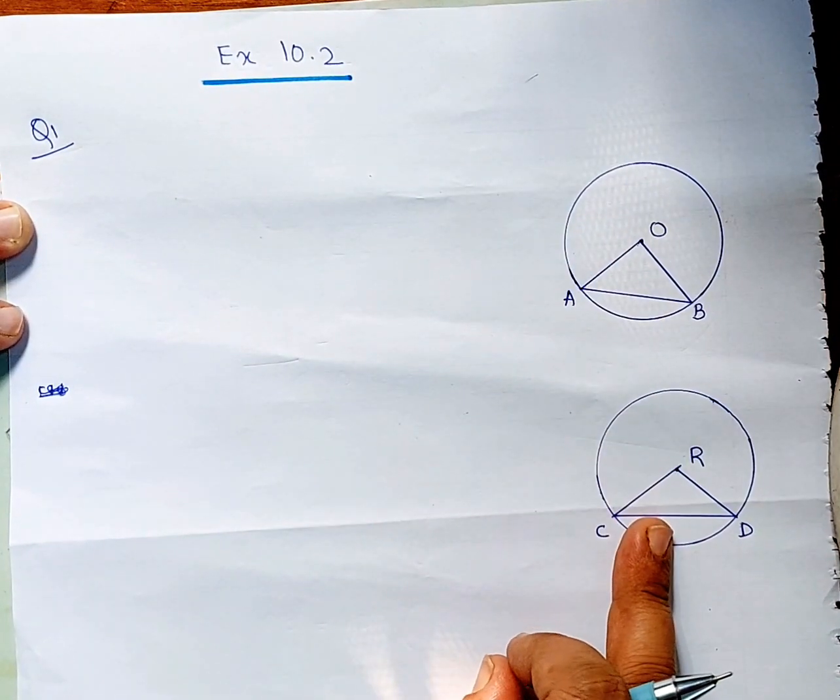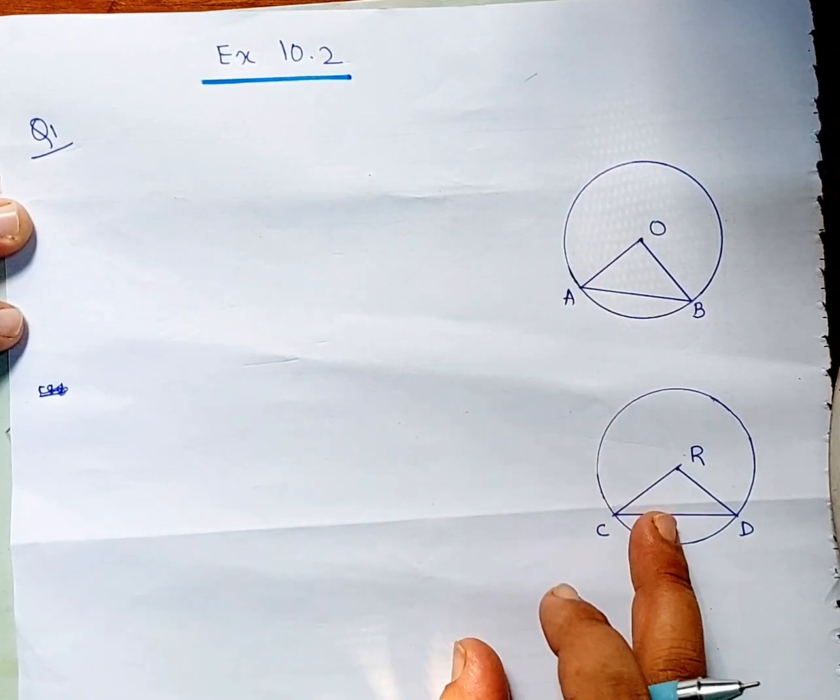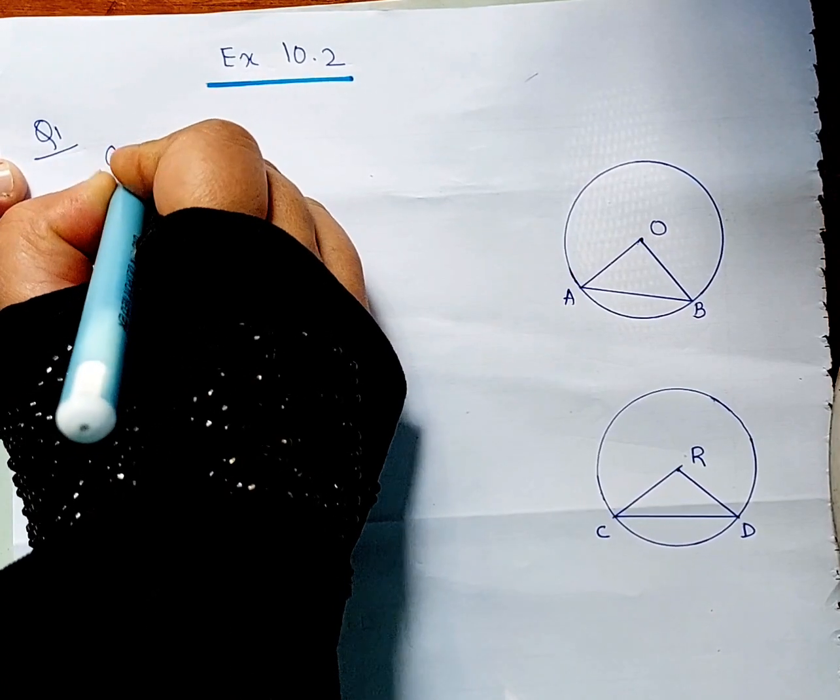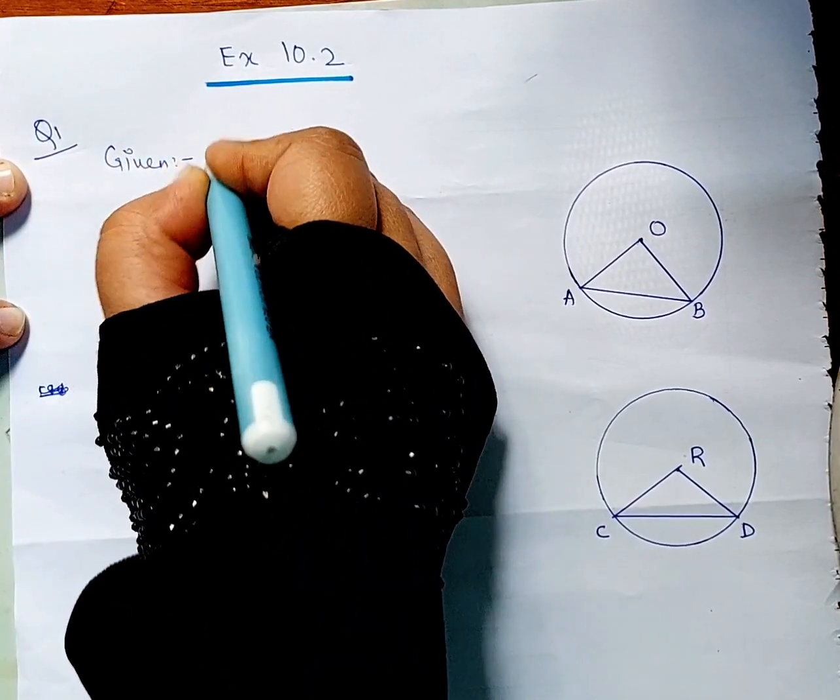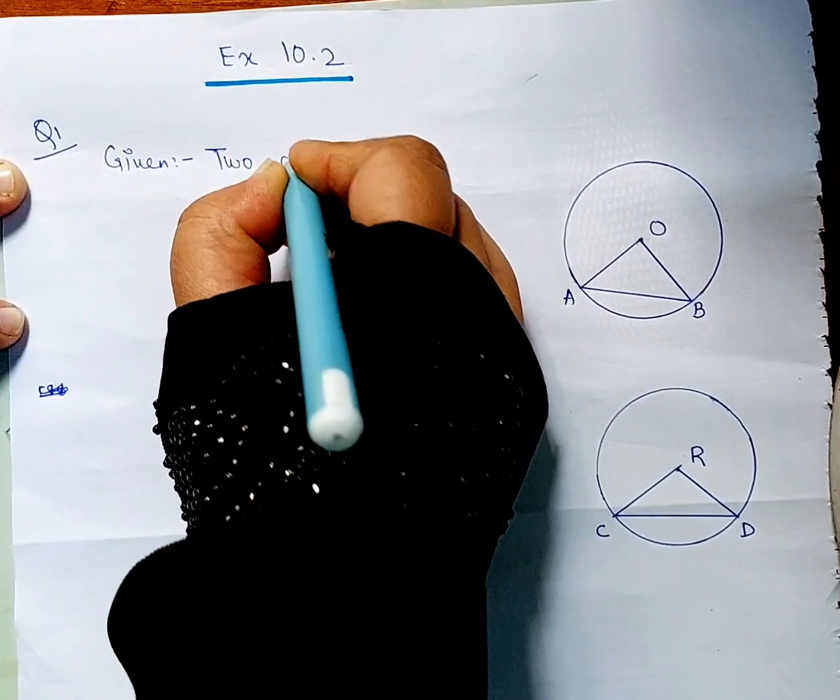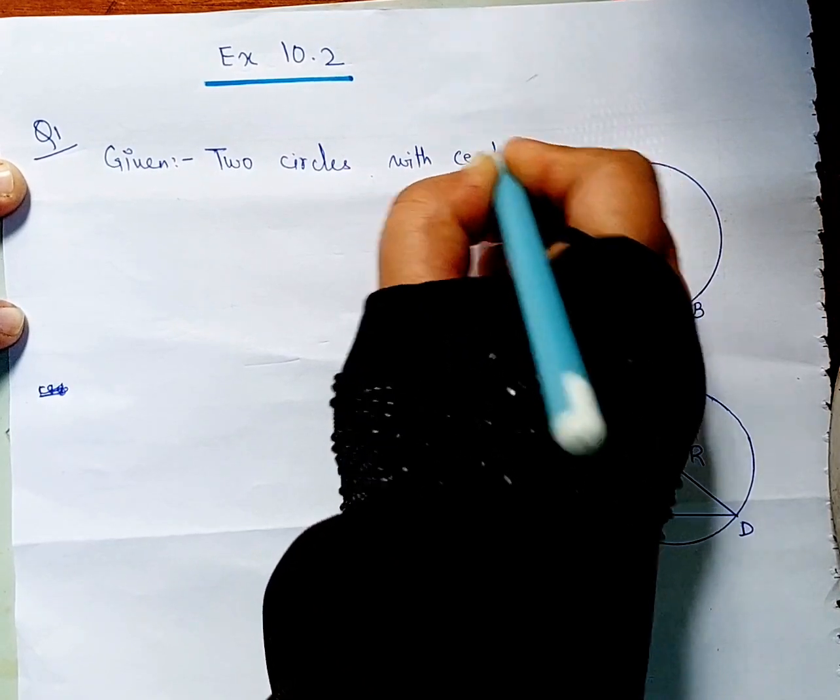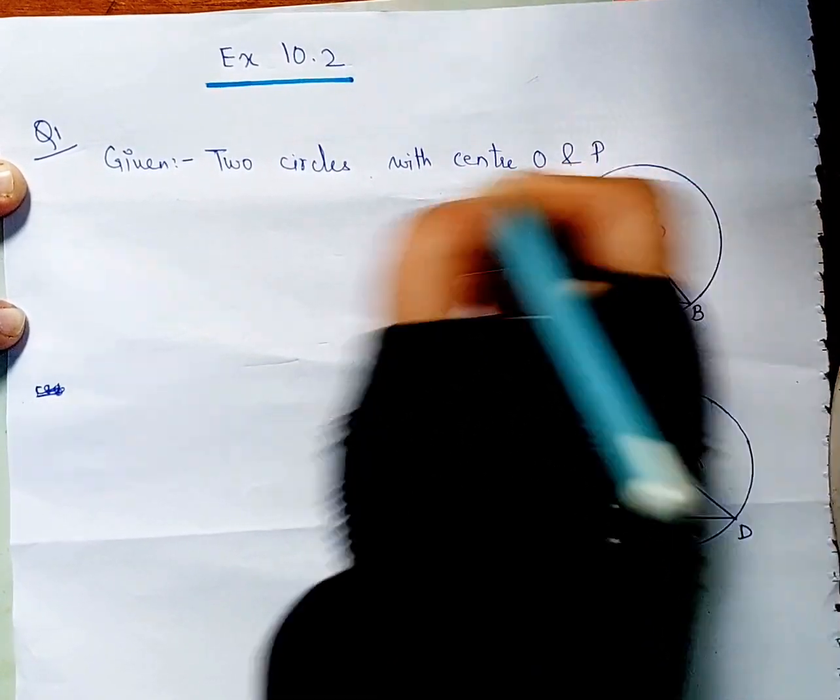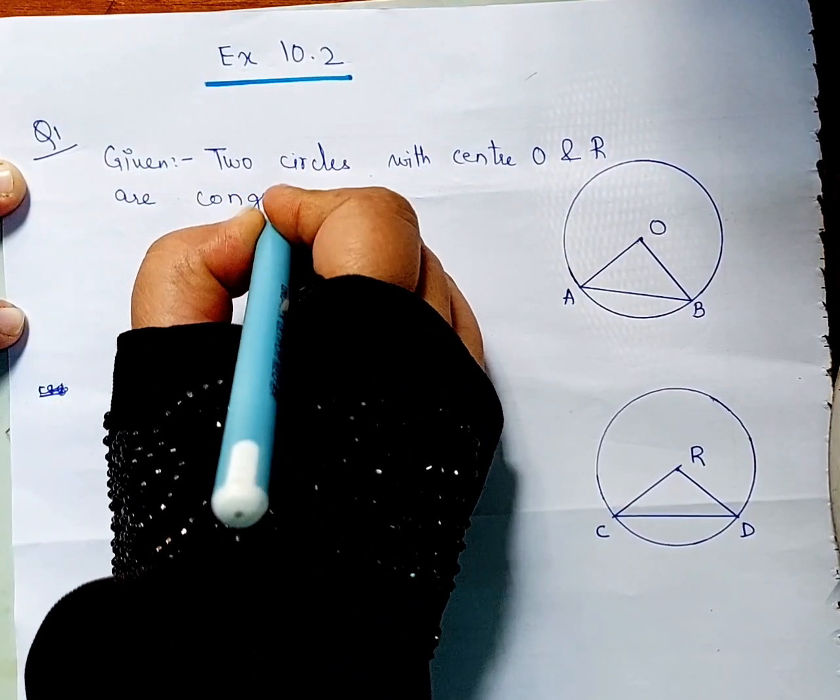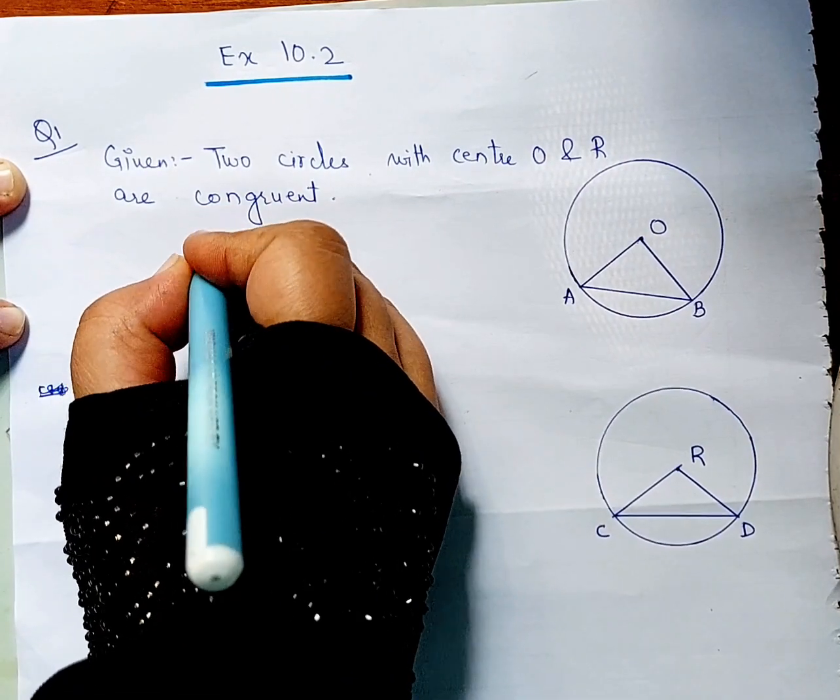This says that two circles are congruent. So if we know that two circles are congruent, then the radius is the same. This is given that we have two circles with centre O and R are congruent. If it is like this, then what will happen?